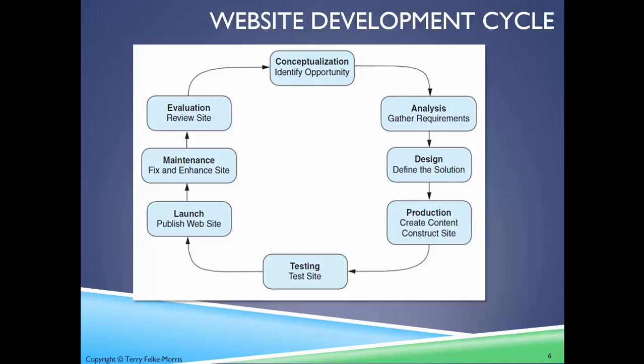The website development lifecycle is a guide to being successful in managing a website project. It includes conceptualization, where someone identifies an opportunity — either changing something that already exists or creating something new. From there you go into the analysis phase where you gather requirements, then the design phase where you come up with solutions, then production where you create content and construct the site. You then test, launch by publishing the site, maintain by fixing and enhancing it, and evaluate by reviewing the site.